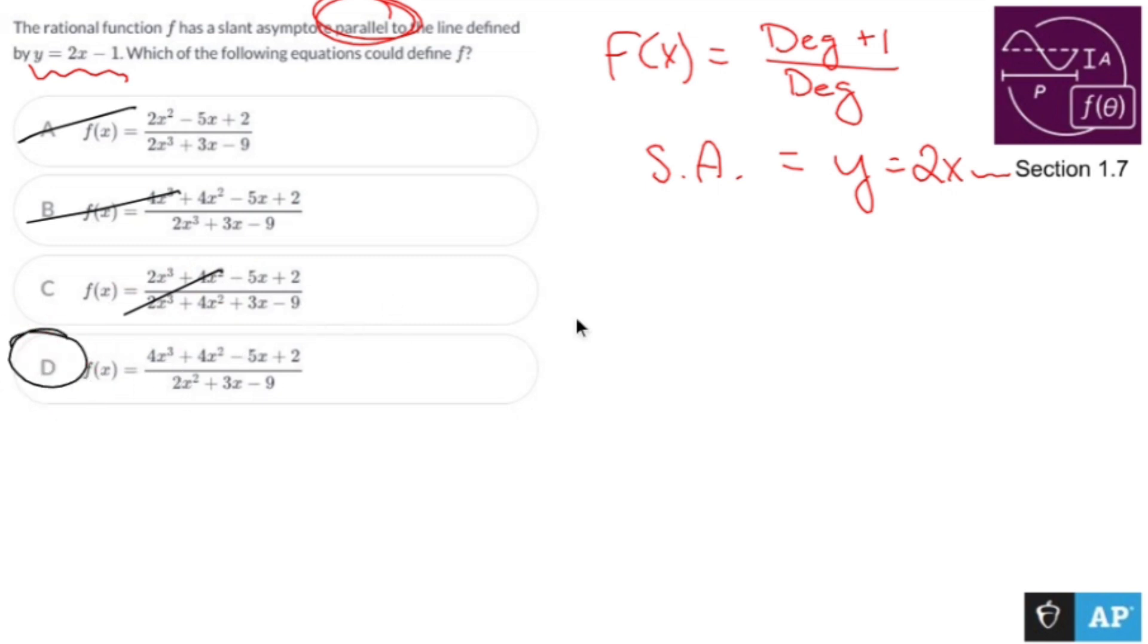Now, usually what happens with these is you are asked to find the slant asymptote, and the way you find the slant asymptote is you do polynomial long division, and your solution to the polynomial long division, not worrying about the remainders, is going to be your slant asymptote.